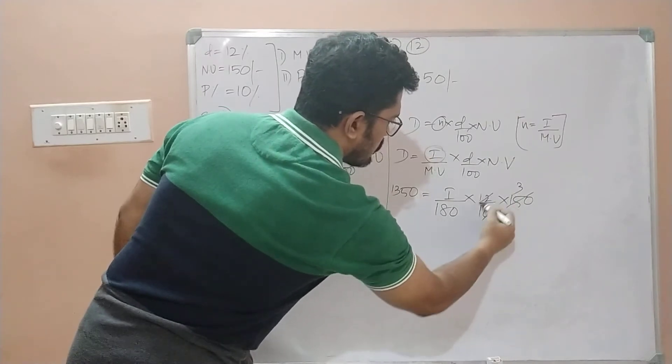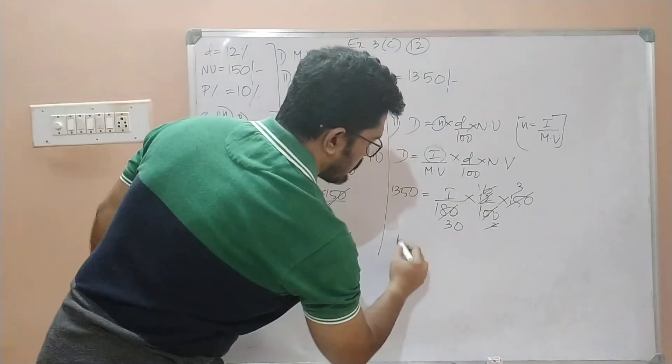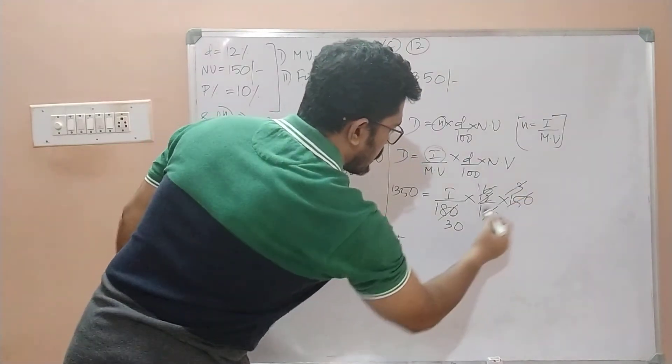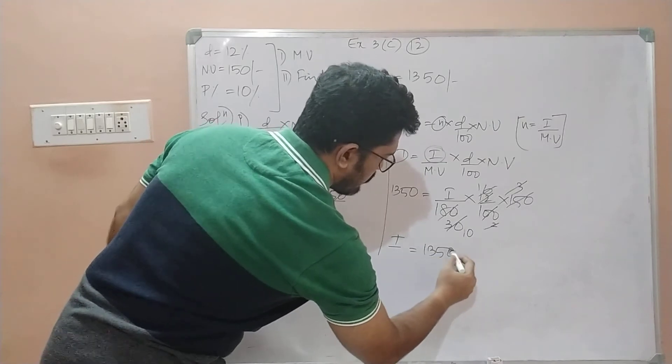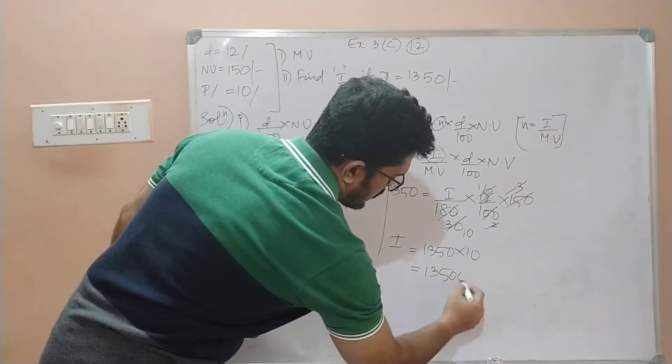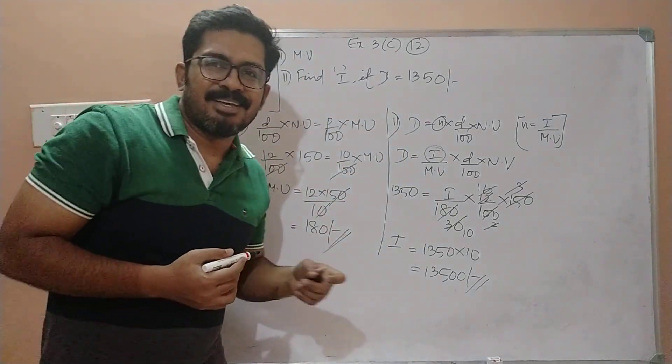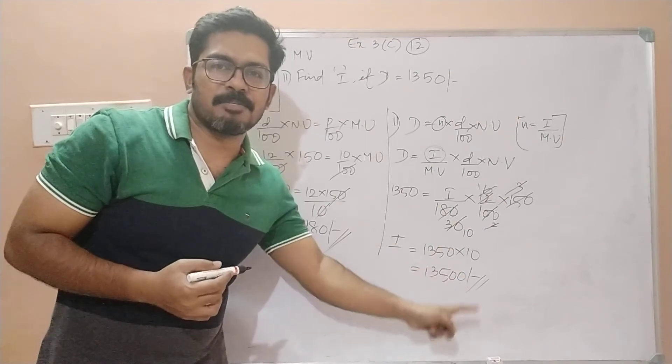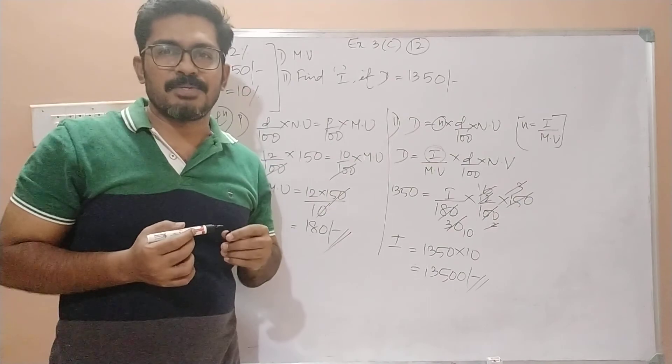Canceling and simplifying the calculation, i is equal to 1350 × 10, which equals 13,500 rupees. So 13,500 is the investment to be made in order to get a dividend of 1350.